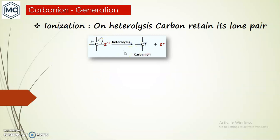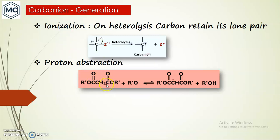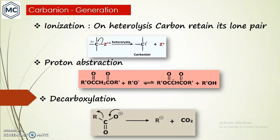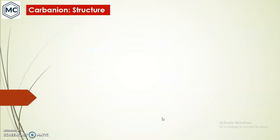One way carbanion formation is possible is by proton abstraction. For example, a CH2 group situated between two electron-withdrawing groups can, in the presence of a base, have a proton abstracted to form a carbanion. A second method is decarboxylation, where the carboxyl group is lost, forming a double bond as the bonding pair is donated to the alkyl group, generating a carbanion. There are other methods as well.